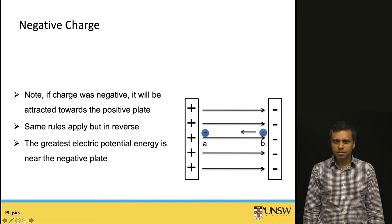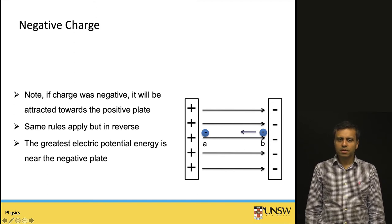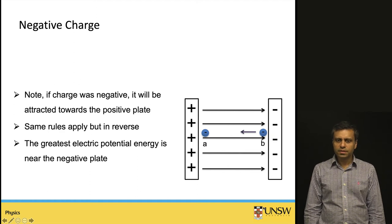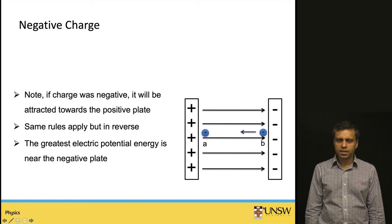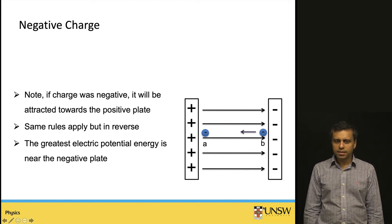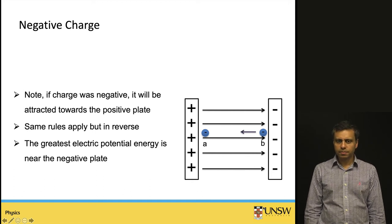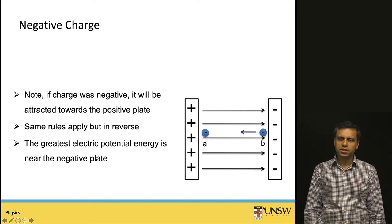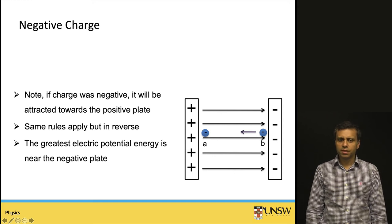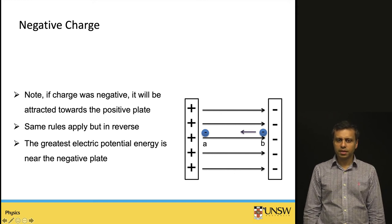What about a negative charge? All the rules apply, except they are reversed. A negatively charged object in the electric field of two charged plates has its highest potential energy when closer to the negative plate. When it moves to position A closer to the positive plate, its potential energy actually decreases — the situation is reversed compared to the positively charged particle case.